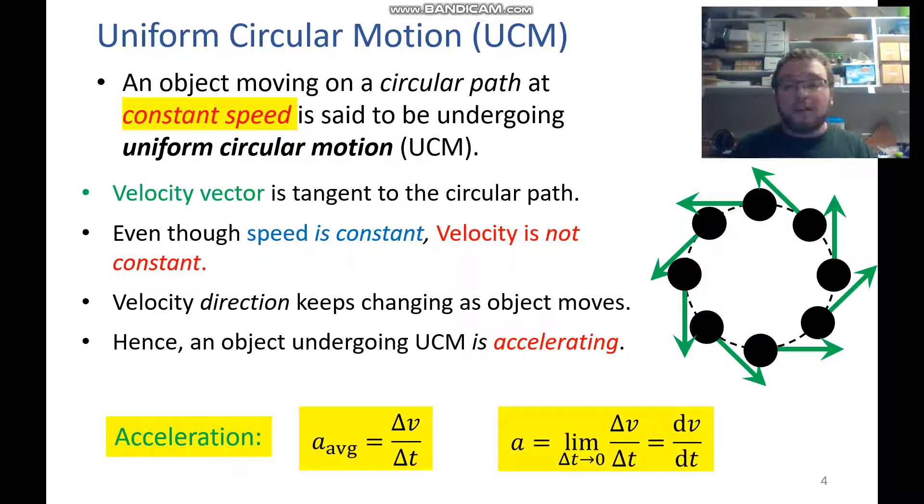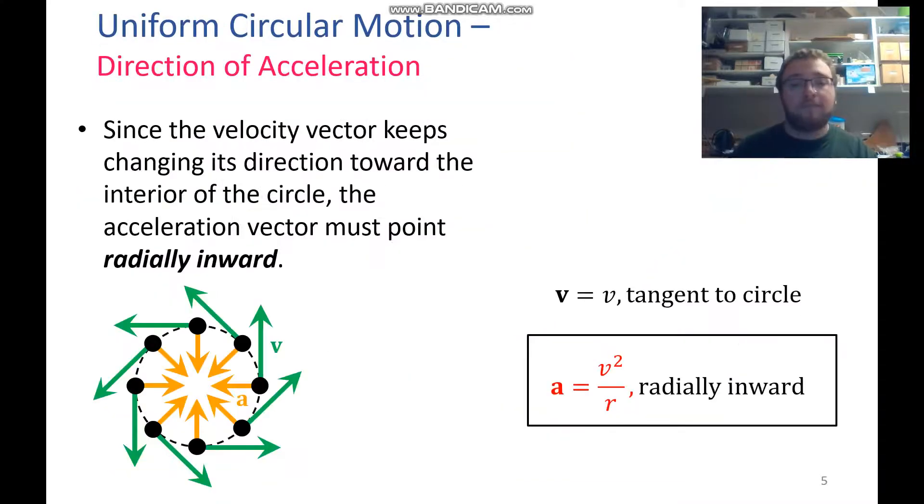So here is our acceleration. It's the change in velocity over the change in time. So because the velocity keeps changing, we have that acceleration, we can calculate it as v squared over r. So that is our centripetal acceleration formula.